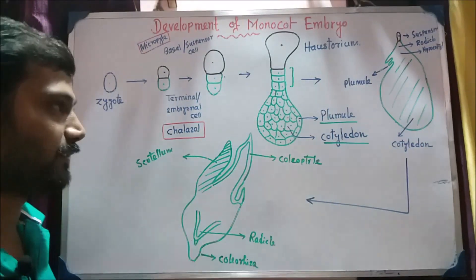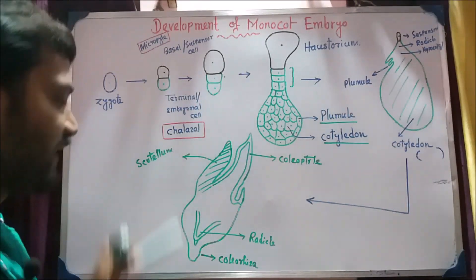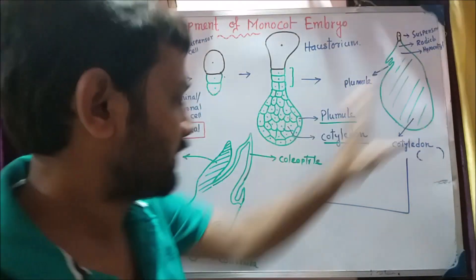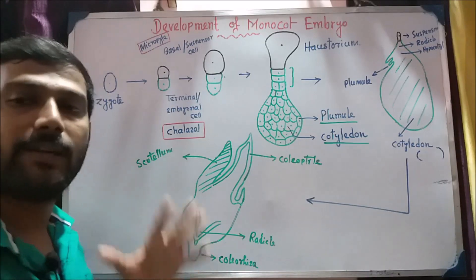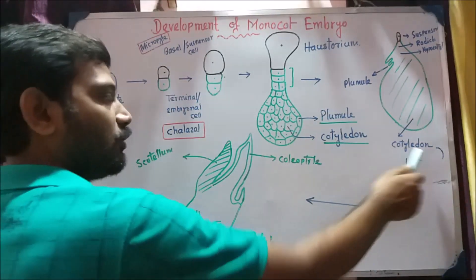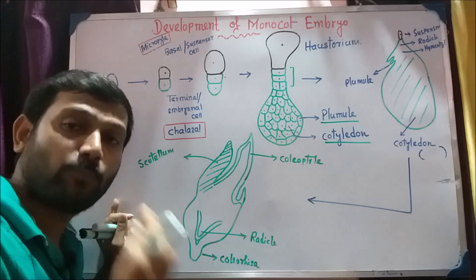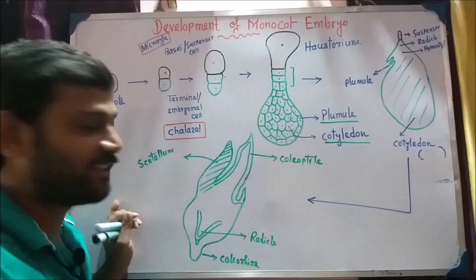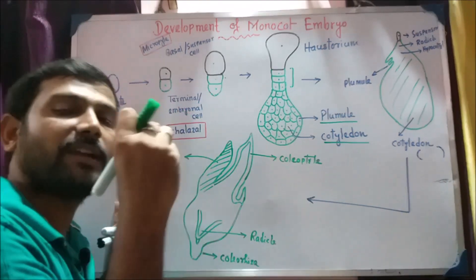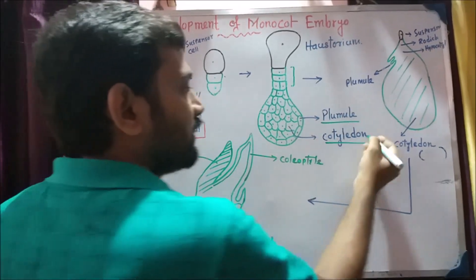Here it is a structure called the cotyledon. The cotyledon is a huge development of the embryo. The cotyledon is a huge development and the embryo is a small part of the cotyledon.